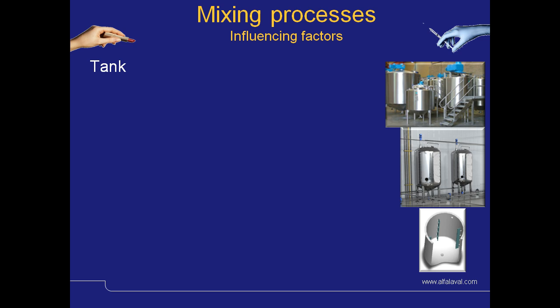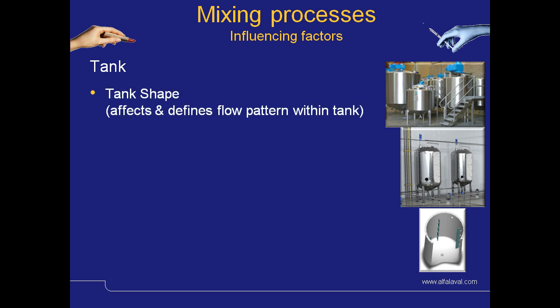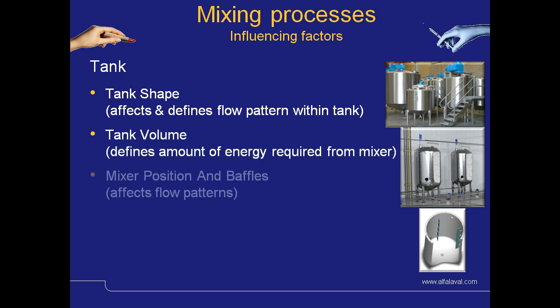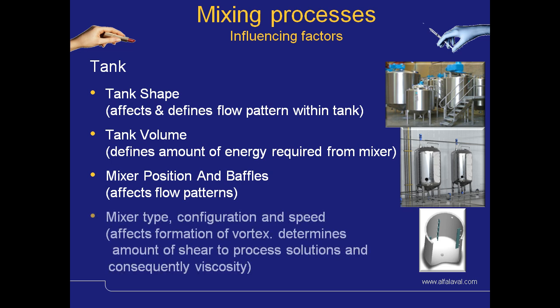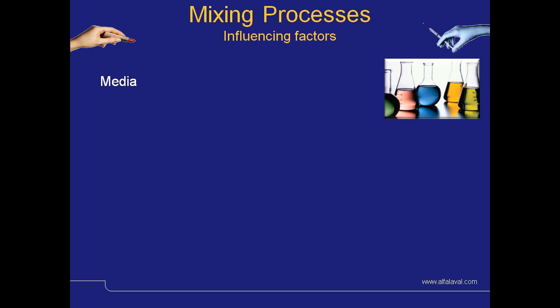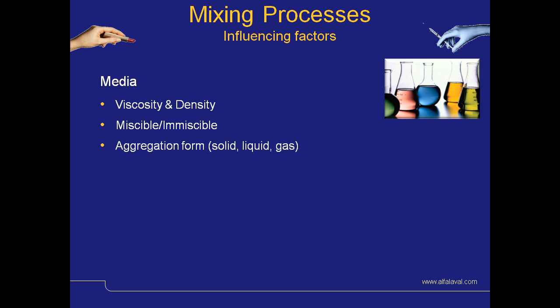It is not just the product that influences the mixing process. Other considerations relate to the tank shape, the tank volume, the mixer position and baffles if fitted, and also very importantly the mixer type, configuration and speed. This can affect formation of vortexes, determines the amount of shear that the process sees, and consequently has an effect on the viscosity of shear sensitive fluids. The media being used also has a big influence on the type of mixing: viscosity and density, whether the product is miscible or immiscible, any aggregation form, amounts of solids, liquids and gases — and this will decide the duty of the process.